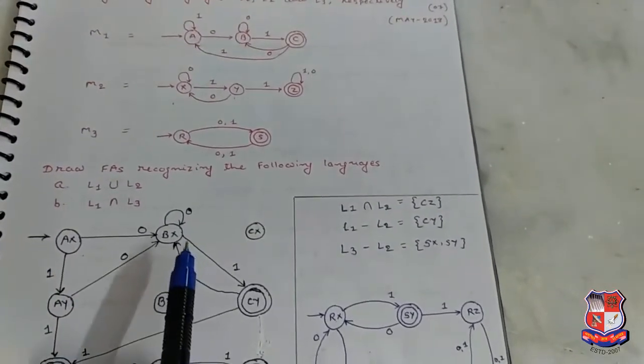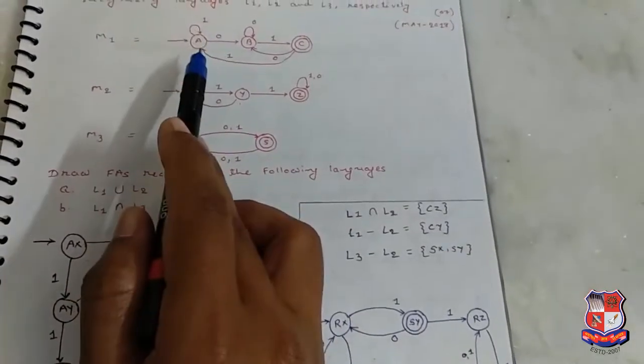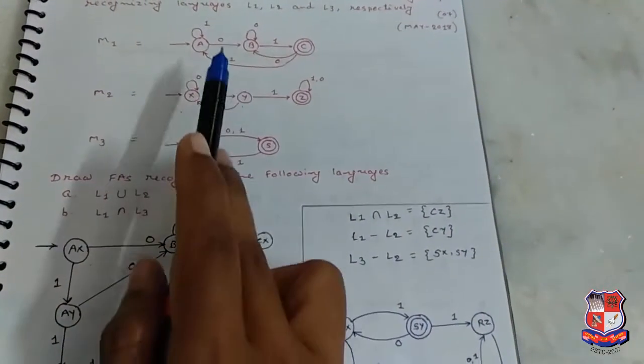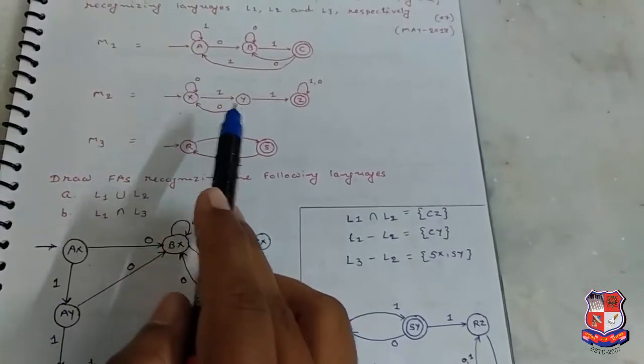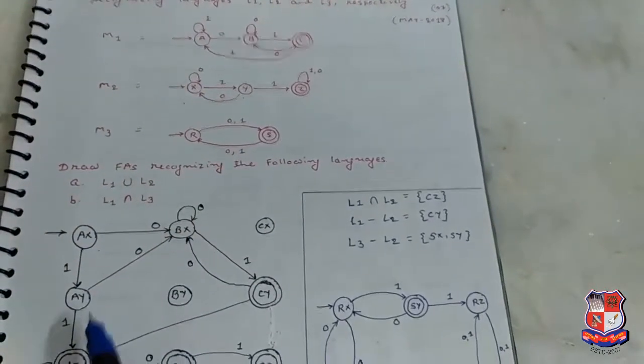In previous videos we already discussed how to find this transition function. A X on 1 goes to A Y.